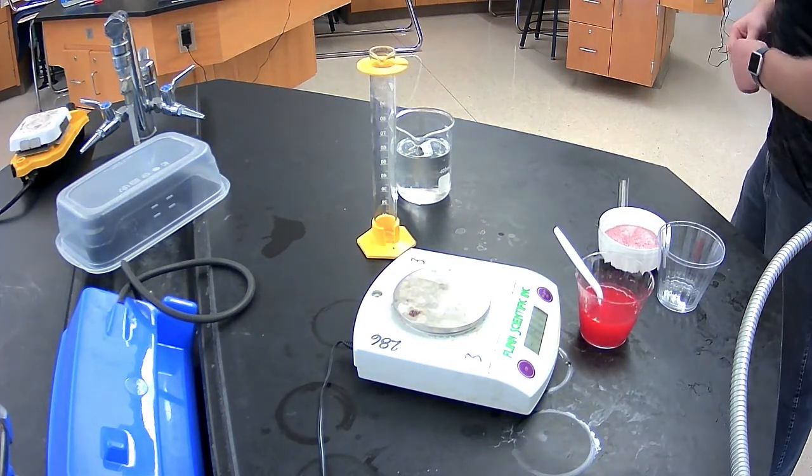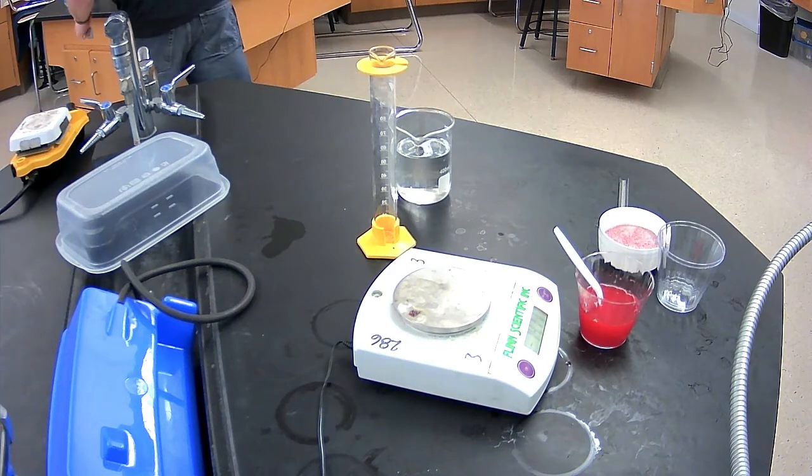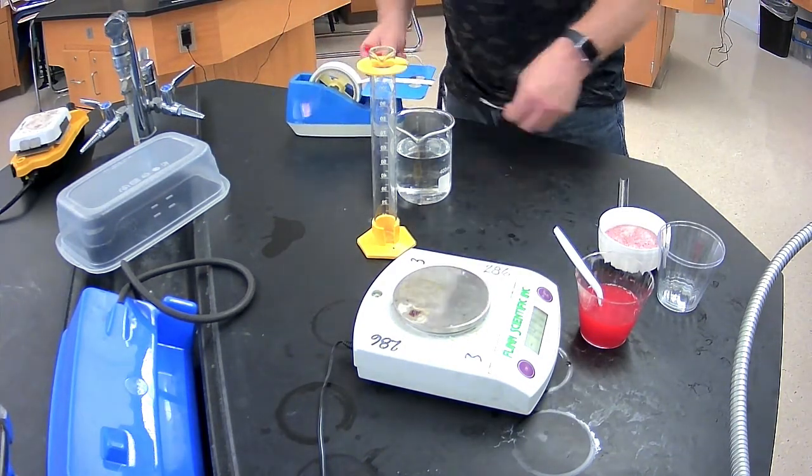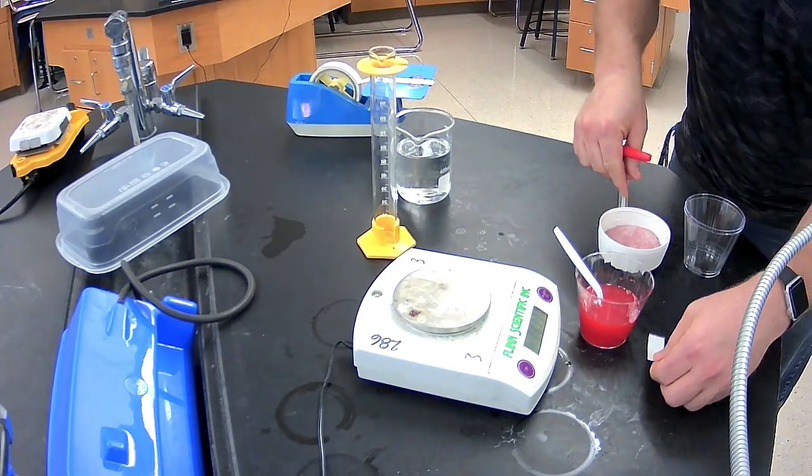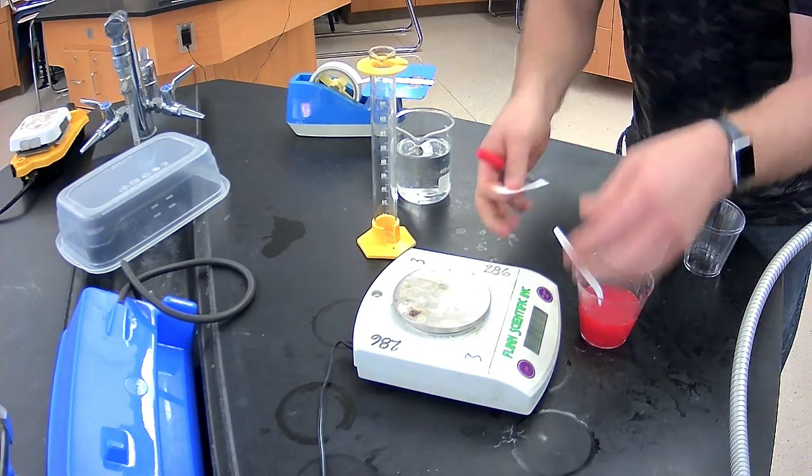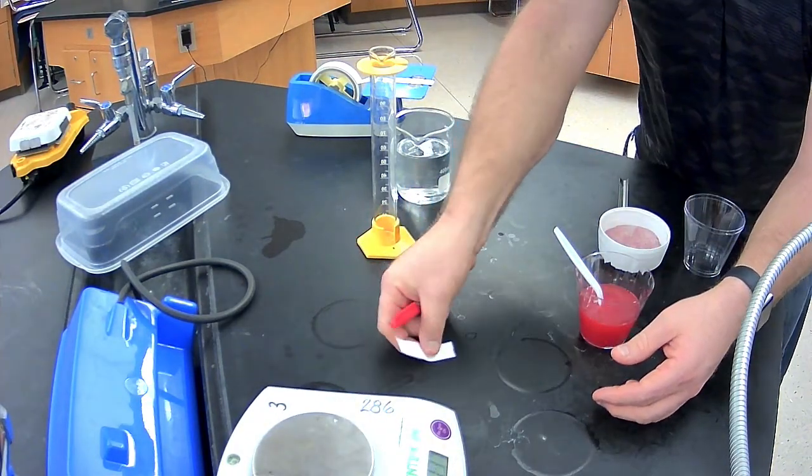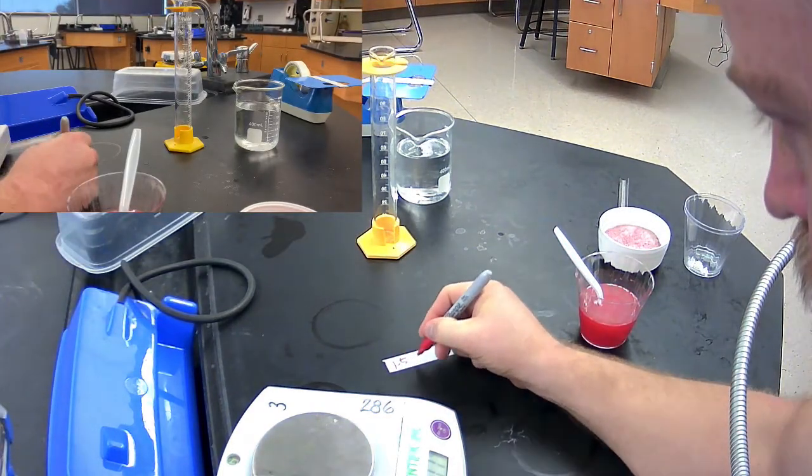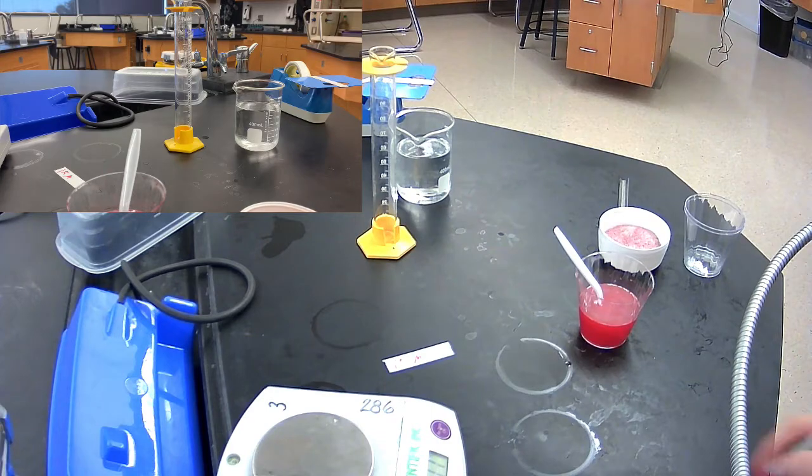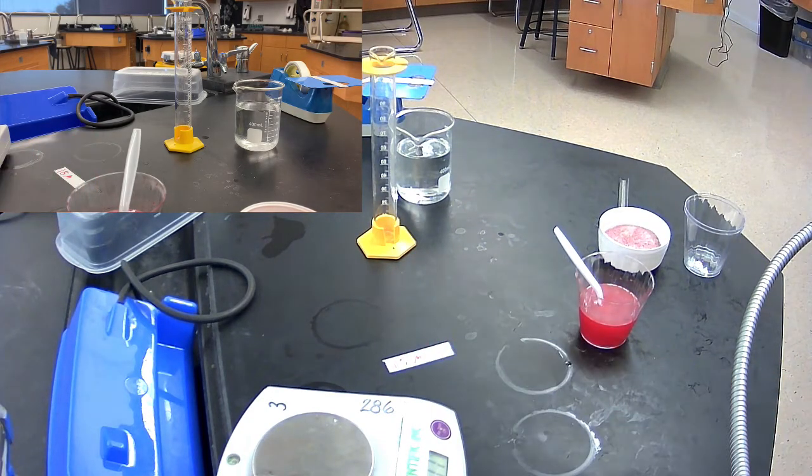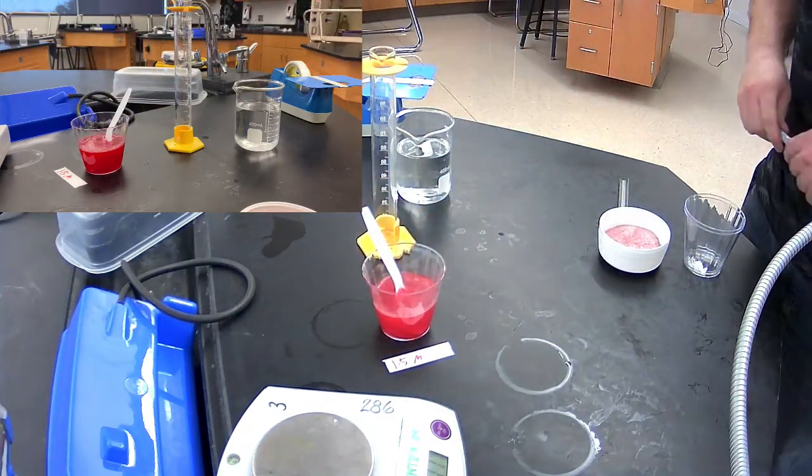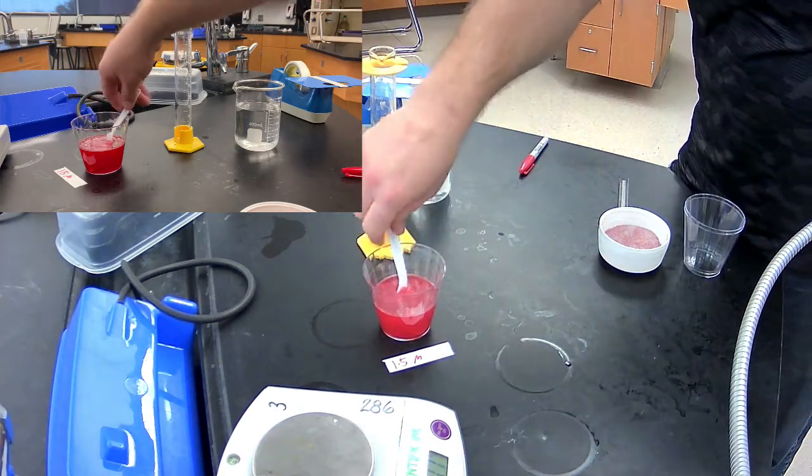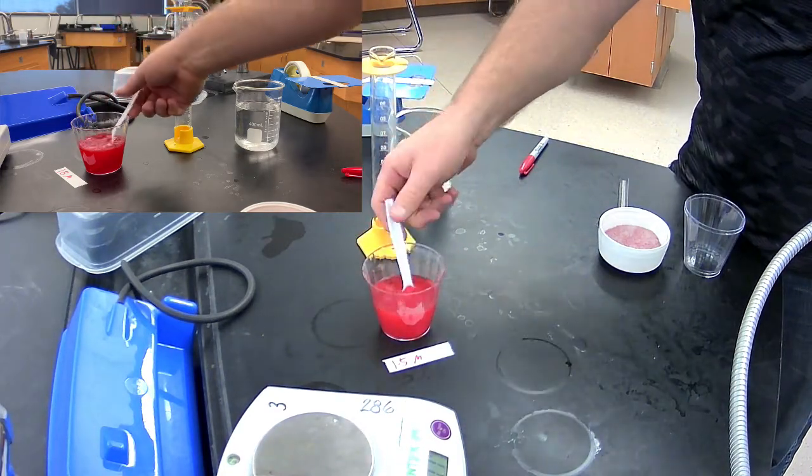So that is 1.5 molar Kool-Aid solution. So I'm going to label that. So we keep track of which solution is which in our settings here. Now, that's the first step in this process is to create our first stock solution. And then from this, we now can start going through the dilutions.